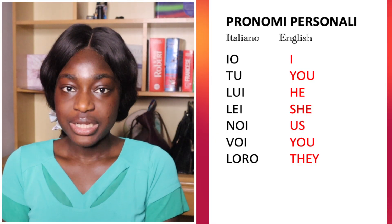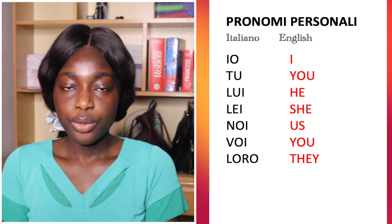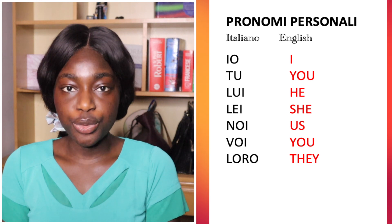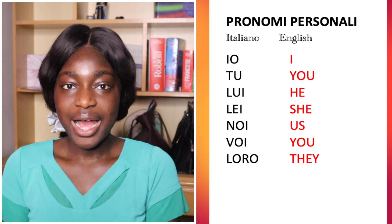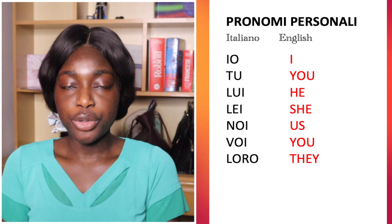Let's get started with personal pronouns, which in Italian is 'i pronomi personali.' First, personal pronouns: io, tu, lui, lei, noi, voi, loro. Let's say it again — io, which stands for 'I'; tu, which stands for 'you'; lui stands for 'he'; lei stands for 'she'; noi means 'us'; voi means 'you'; loro means 'they.'